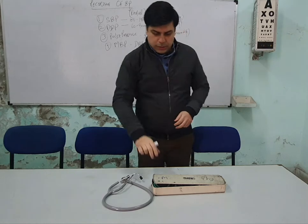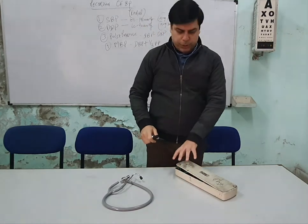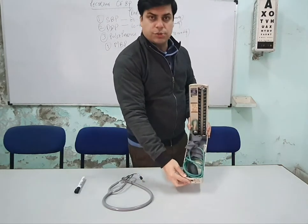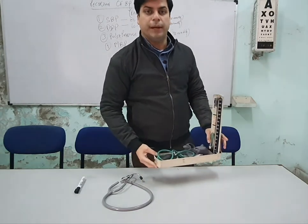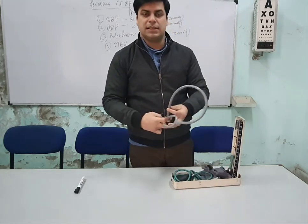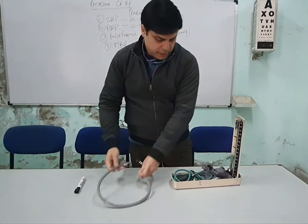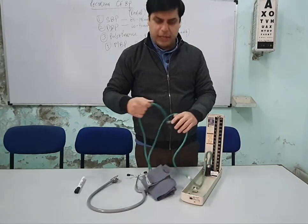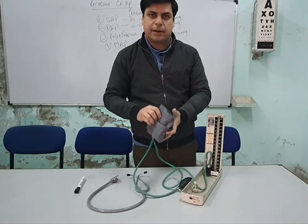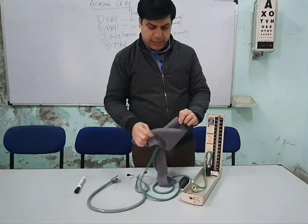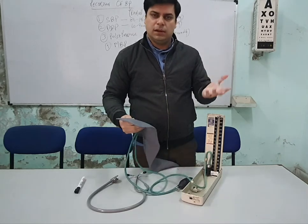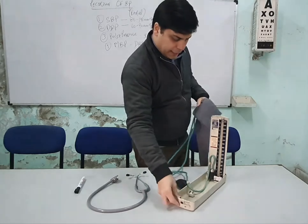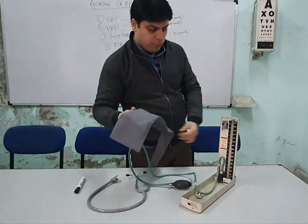For recording blood pressure, the instruments required are the sphygmomanometer and a stethoscope. Blood pressure can be recorded by two methods: direct method and indirect method. Today we are going to discuss the indirect method. The direct method uses a cannula, which is not done practically here. In the indirect method, we use the sphygmomanometer.